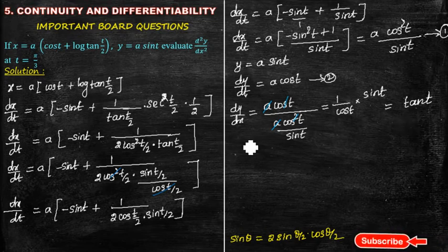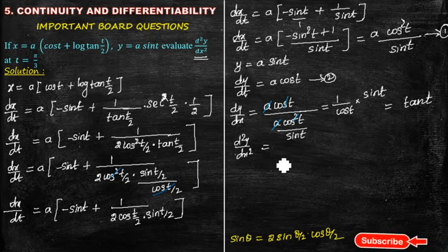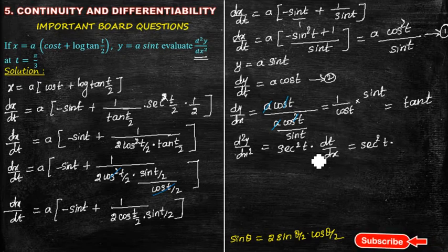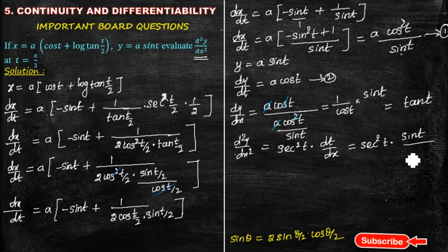Now d²y/dx² is the question. The function dy/dx equals tan(t), and we differentiate with respect to x. The derivative of tan(t) is sec²(t), multiplied by dt/dx. From equation 1, dx/dt equals a·cos²(t)/sin(t), so dt/dx equals sin(t) divided by [a·cos²(t)].